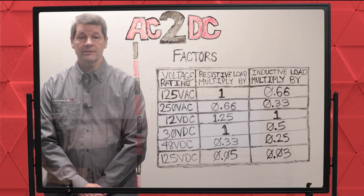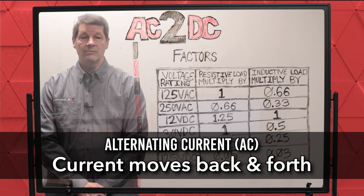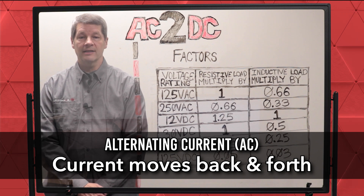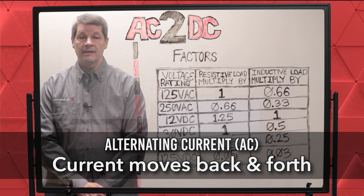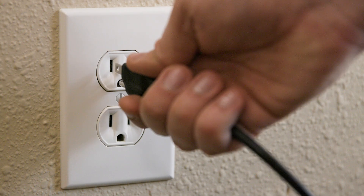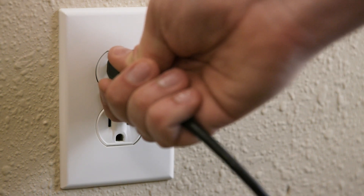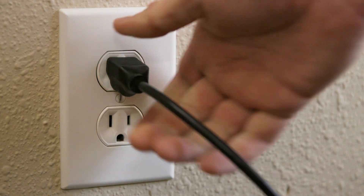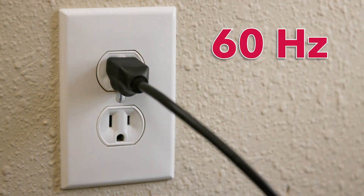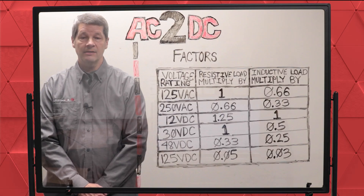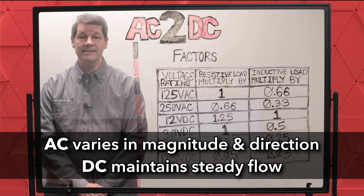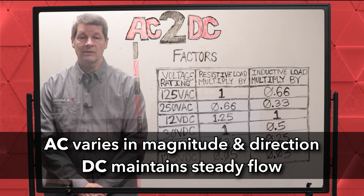Then what is AC or alternating current? This is when the current moves back and forth. All wall sockets utilize alternating current. In the United States, this back and forth action in a wall outlet happens 60 times a second. In summary, AC varies in magnitude and direction while DC maintains a steady flow.